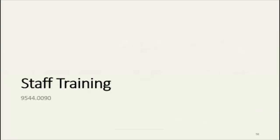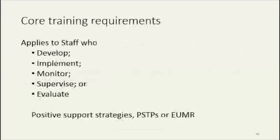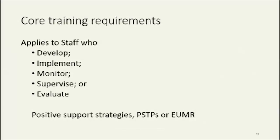Speaking of training, the training is split up into two areas: core training and function-specific training. The core training requirements apply to any staff who develop, implement, monitor, supervise, or evaluate positive support strategies, positive support transition plans, or the emergency use of manual restraint. Every person that has their service governed by this rule must have positive support strategies developed for them, which means any staff working with that person will most likely need to implement or monitor positive support strategies. So direct care staff working with that person will need to take the core training.